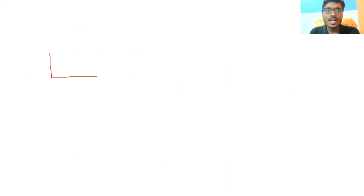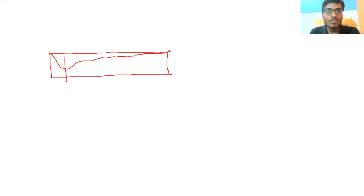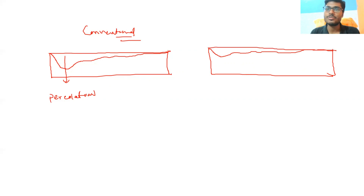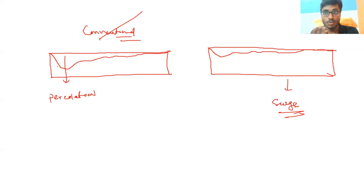In conventional surface irrigation, the infiltration diagram shows more infiltration at the starting point, causing greater percolation loss. But in surge irrigation, the water distribution is more uniform and nearer to a uniform distribution profile. Under conventional irrigation there is percolation loss at the starting point because more infiltration opportunity time is available there. Under surge irrigation, the opportunity time is roughly uniform throughout the field, which is why surge irrigation has lower percolation loss.